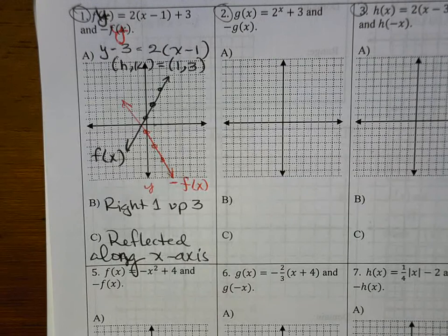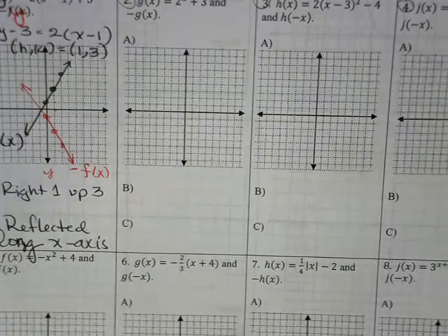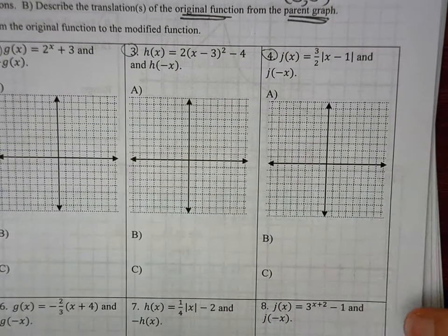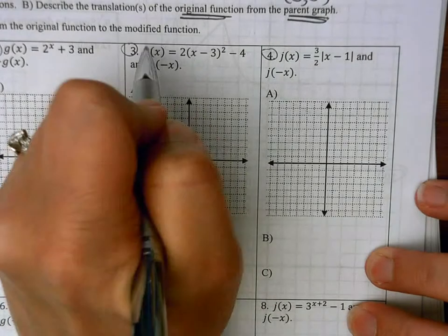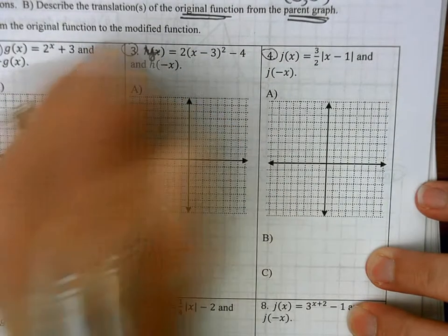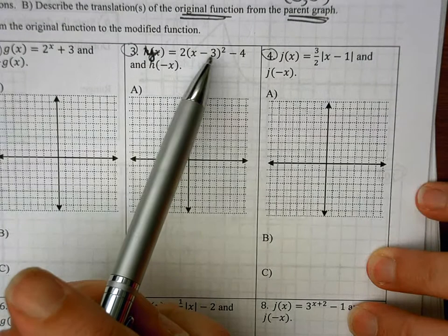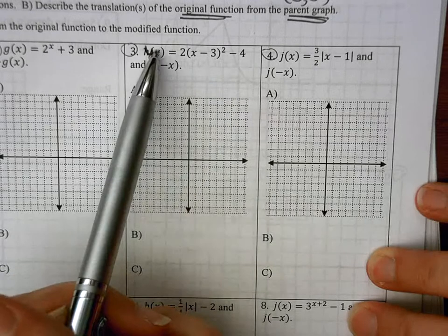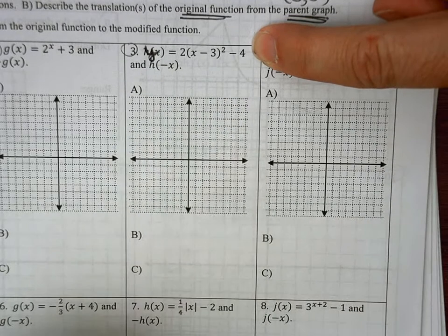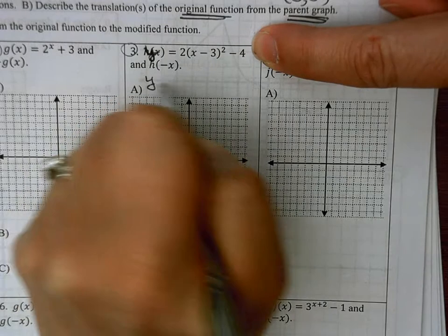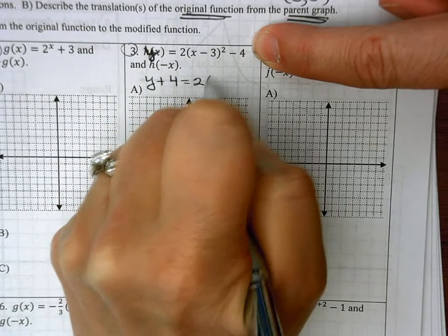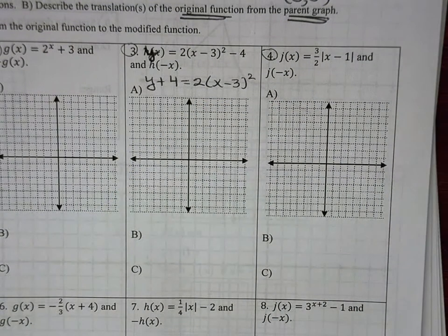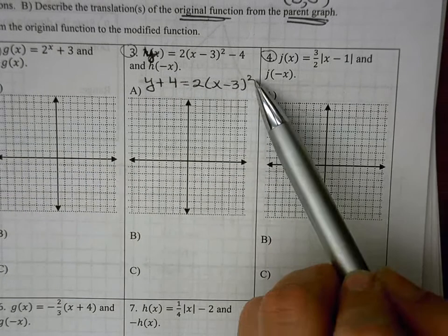Now let's do question number 3, which has the negative inside. The same idea — h of x is the same as y. Putting it in standard form: the minus 3 belongs to the x because it's grouped, but the negative 4 is not grouped with x, so it belongs to the y. I move the minus 4 over by adding 4, giving me y plus 4 on the left side.